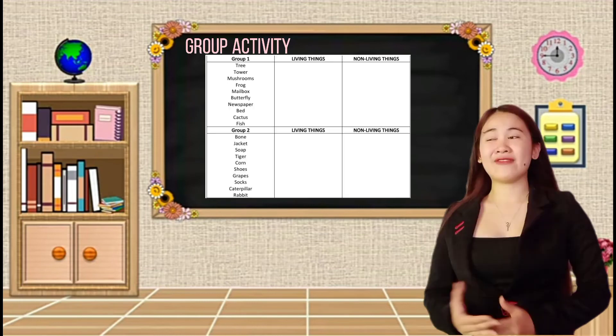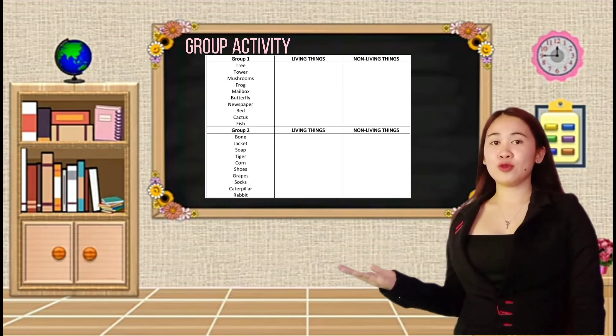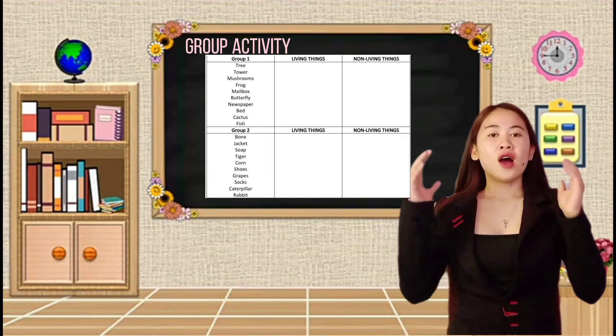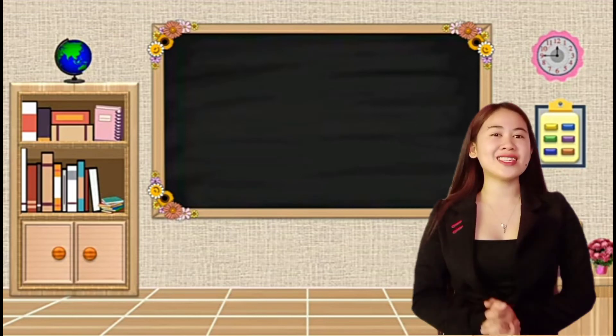This is the group one. And this for the group two. So, I'll give you five minutes to answer. The timer starts now. Are you all done? Okay, the two groups got the correct answer. Now, let's have an activity.